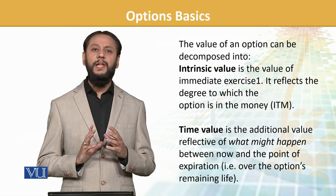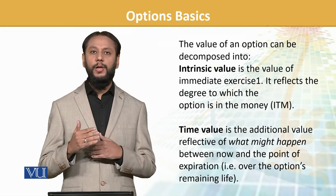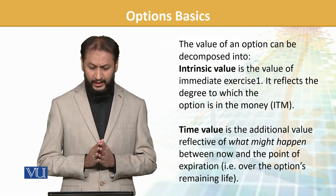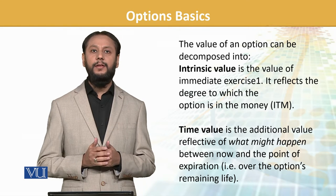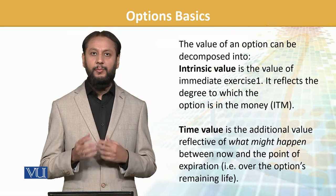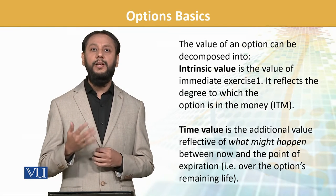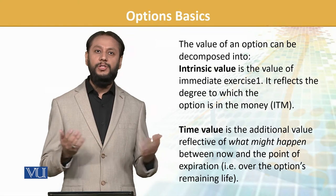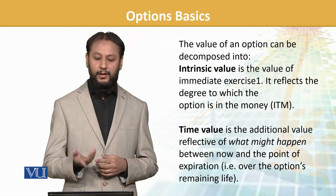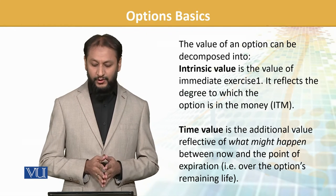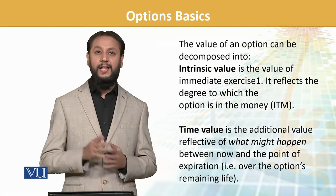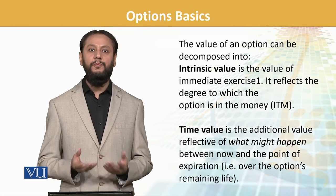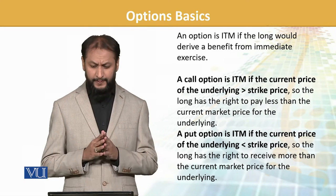The value of an option is placed into two groups. The determinants are all the same, but there are two core parts into which the value is split. One is its intrinsic value. Intrinsic value means the difference between the strike price and the spot price — that difference is its intrinsic value. It reflects the degree to which the option is in the money — whether it is in the money, at the money, or out of the money. The second part is time value. Time value is the additional value reflecting what might happen between now and the point of expiration. These two components together determine an option's value.